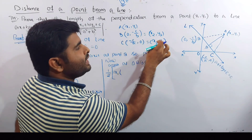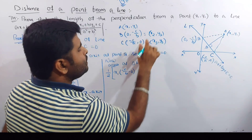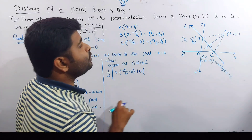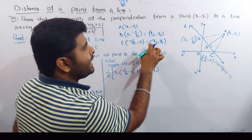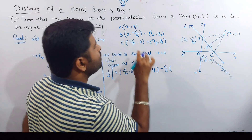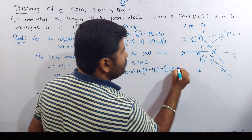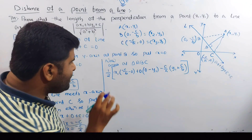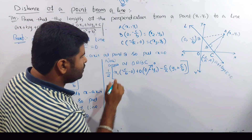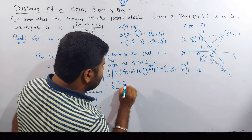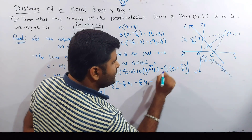Using the area of triangle formula: half into x1 times (y2 minus y3). Here y2 is minus c by b, y3 is 0. x2 is 0. Then plus x2 times (y3 minus y1), which is 0 times (0 minus y1). Then plus x3 times (y1 minus y2): x3 is minus c by a, and y1 minus y2 is y1 minus (minus c by b) which is y1 plus c by b. After simplifying: minus c by b times x1, arranged with minus c by a terms.